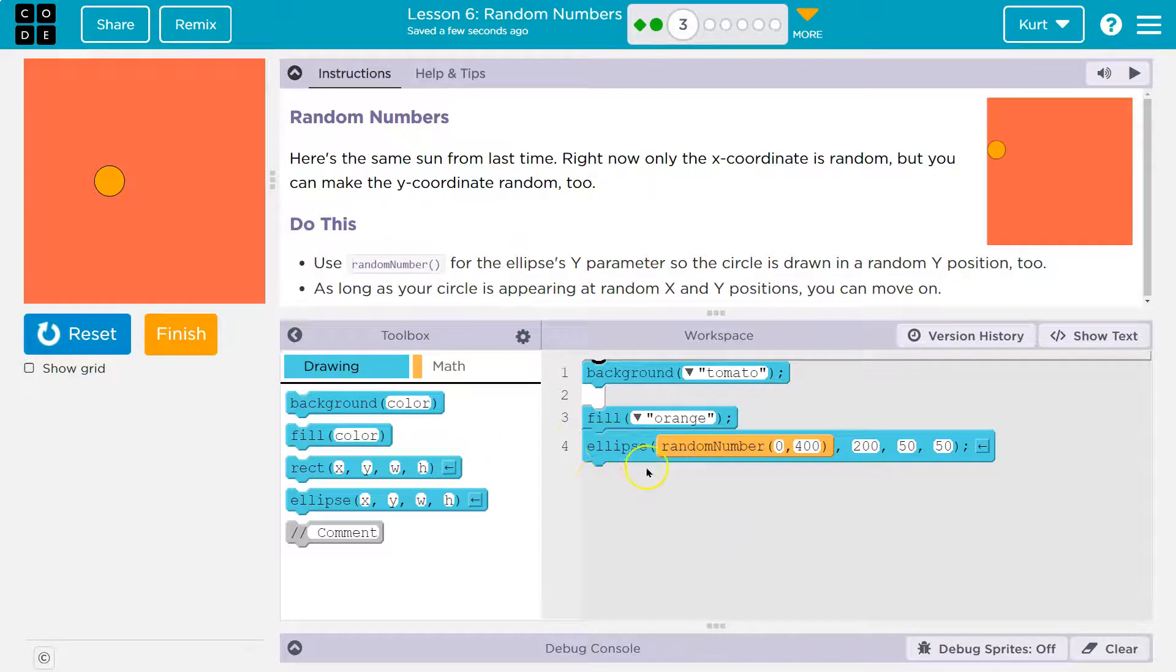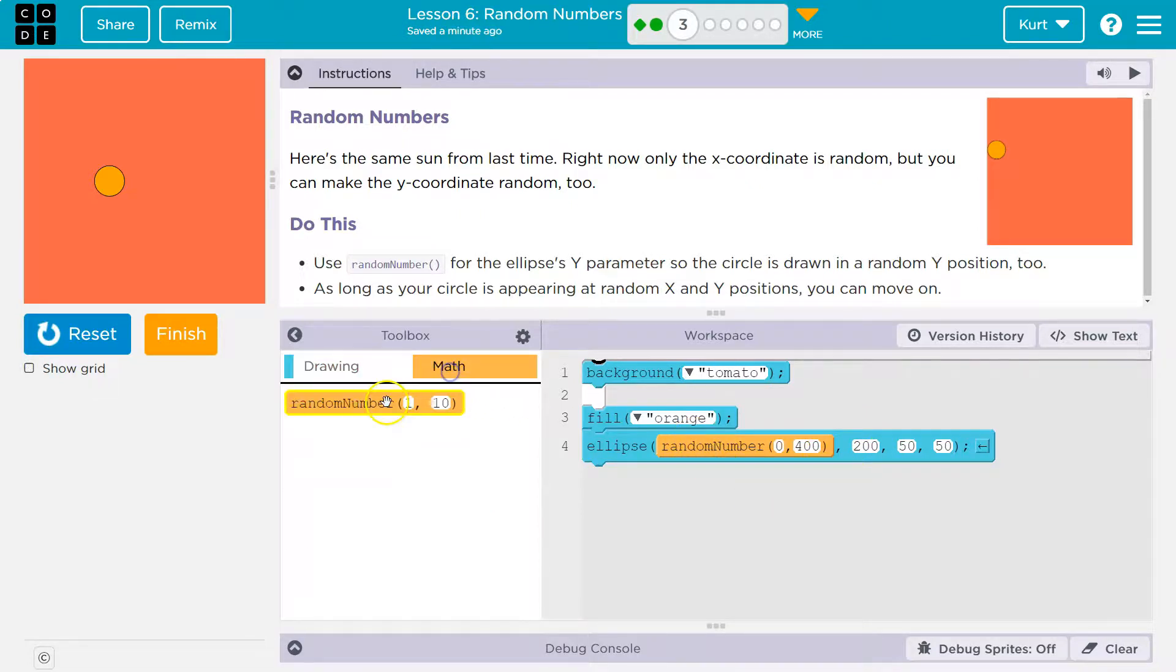So we want to do y. Well, for an ellipse it goes: ellipse x, y, width, height. If we want to randomize y, well, here's random x here. 0 to 400 for x. This is all x, right? And then the second blank, not the second blank of random number, the second blank of ellipse. Because this random number block is in the x value, we need a random number block in the y.